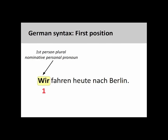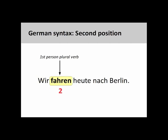German has a similar syntax, although we will see toward the end of this presentation that it is more flexible than English. Here the subject is the first person plural nominative personal pronoun 'wir' — 'we.' There is no progressive construction in German, so only one verb, the first person plural form of 'fahren' — 'to drive' — is in the second position.